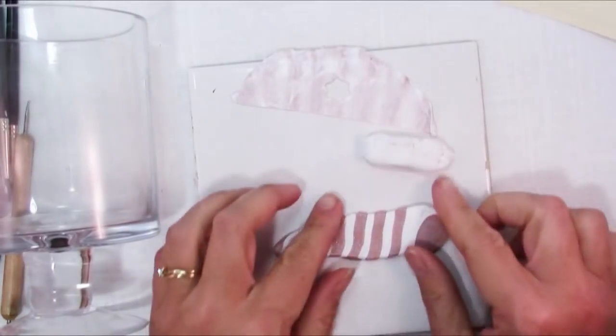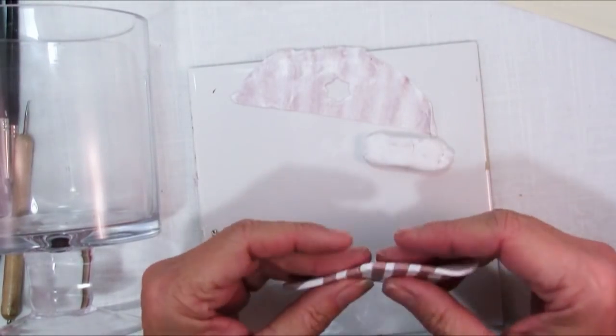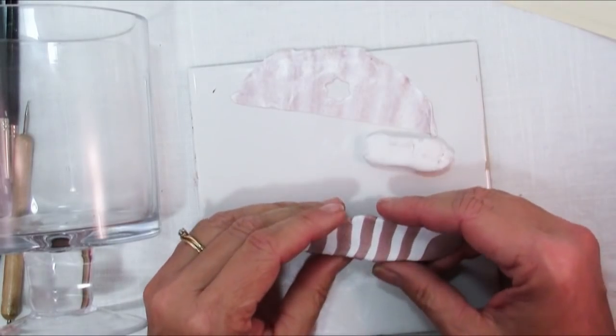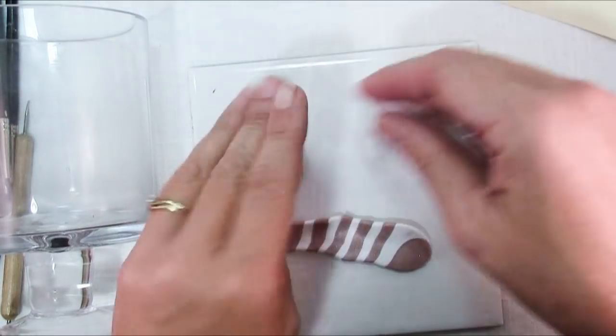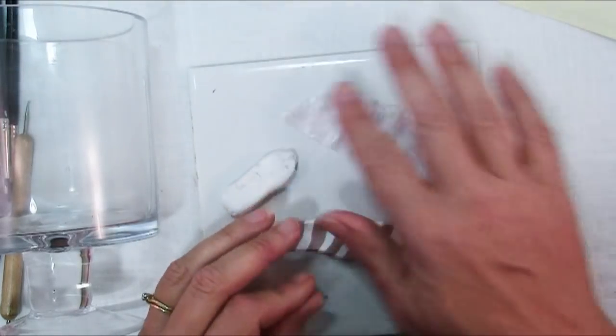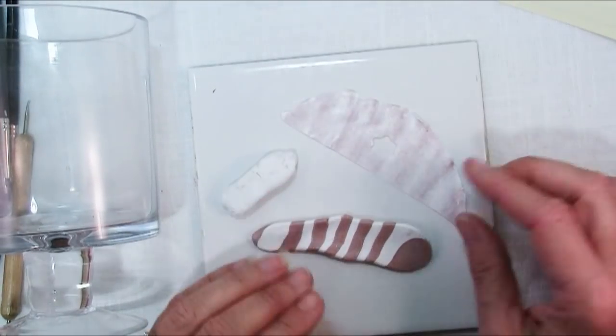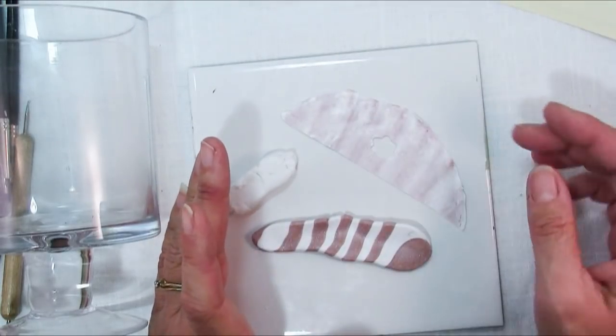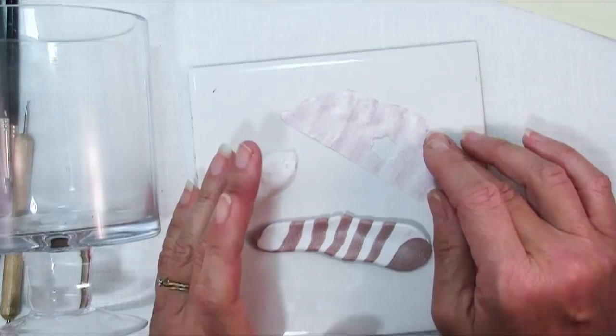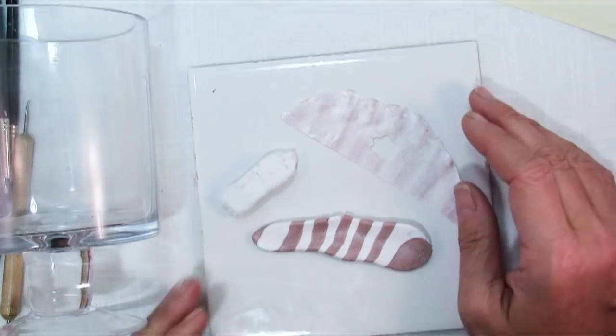You get stripes and then you roll it through your pasta machine and you fold it in half and you roll it through until you get something like this where you have really fine stripes, kind of smudgy looking. You just keep rolling it through. It only takes maybe three or four times through the pasta machine to get this look with your clay.